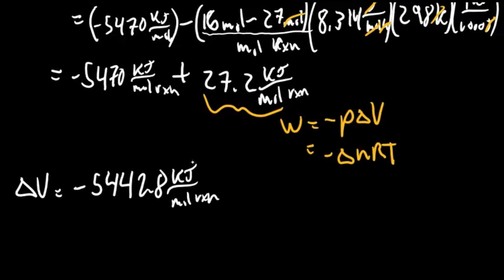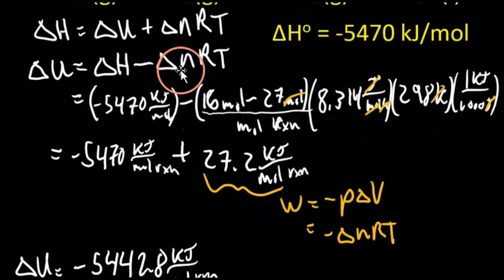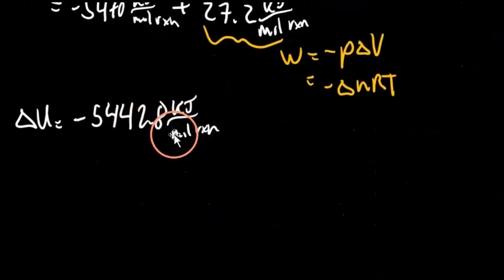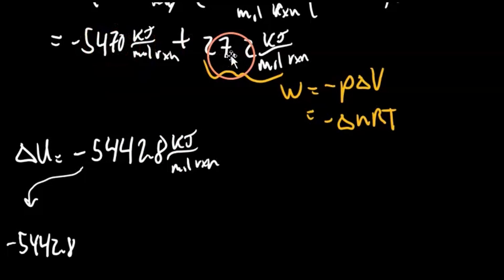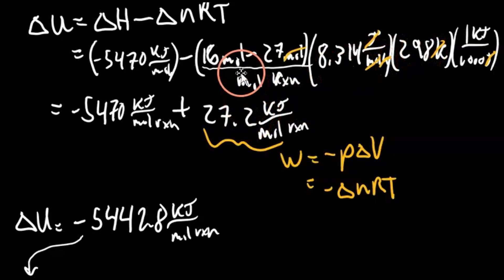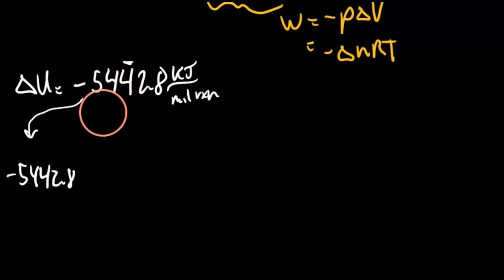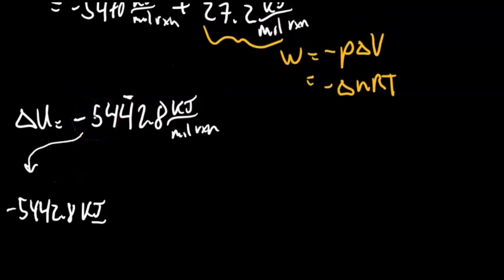So this is our delta U per mole of the reaction here, but we want it for 1.8 grams of octane. So we're going to convert these moles into grams of octane. We're going to start with this number right down here: negative 5442.8. We're not significant to that many digits. We have three sig figs, so we'd have three sig figs here, three sig figs here. So we only have three significant figures, three significant digits. Kilojoules per one mole of the reaction.